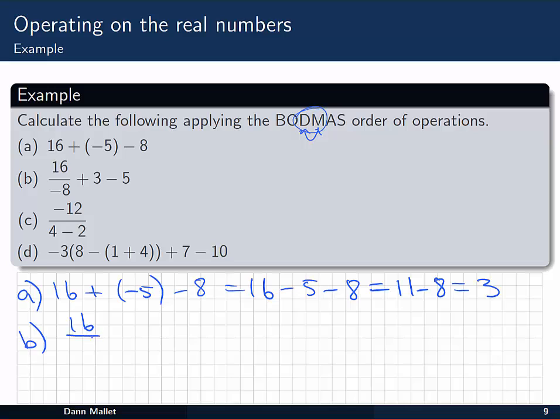Now in B, we've got 16 on minus 8, and plus 3 minus the 5. The order of operations says I have to do that division first. 16 divided by minus 8 is going to be minus 2 plus 3 minus 5. And now I can carry out the additions and the subtractions moving from left to right. So minus 2 and 3 makes 1 take 5, and 1 take 5 is going to leave me with minus 4.